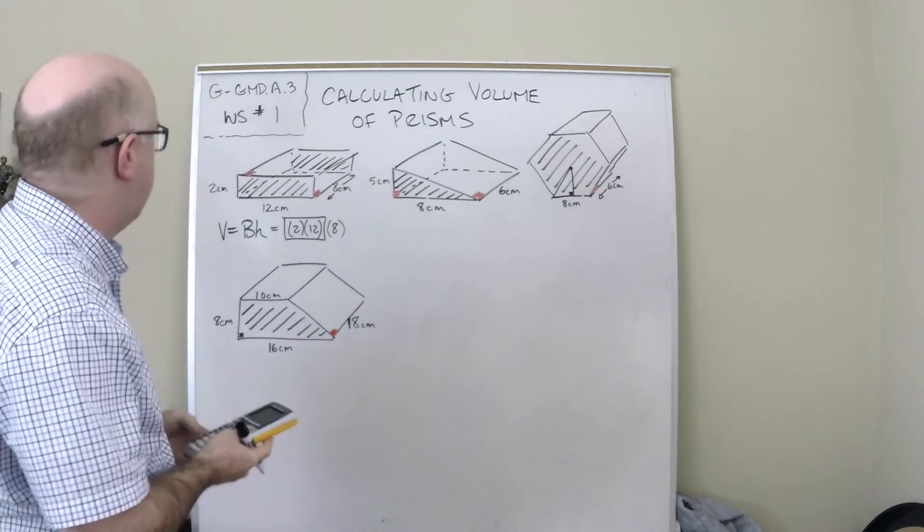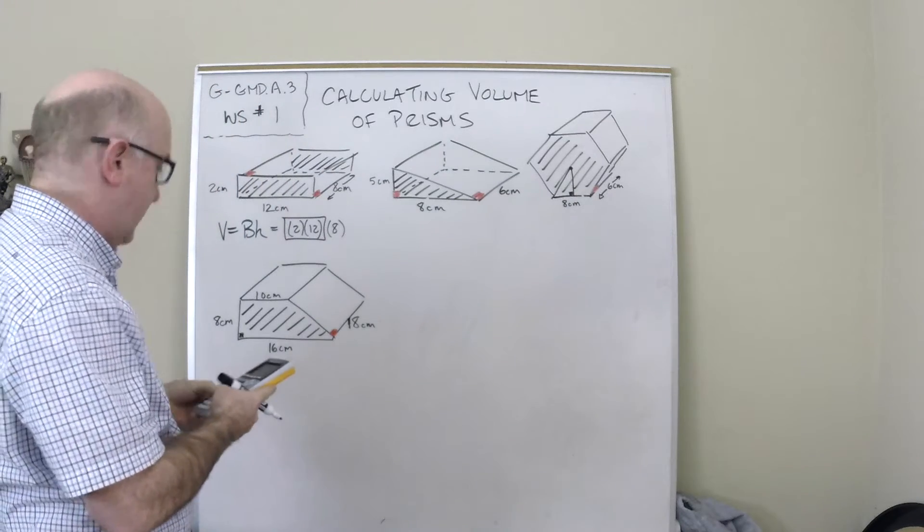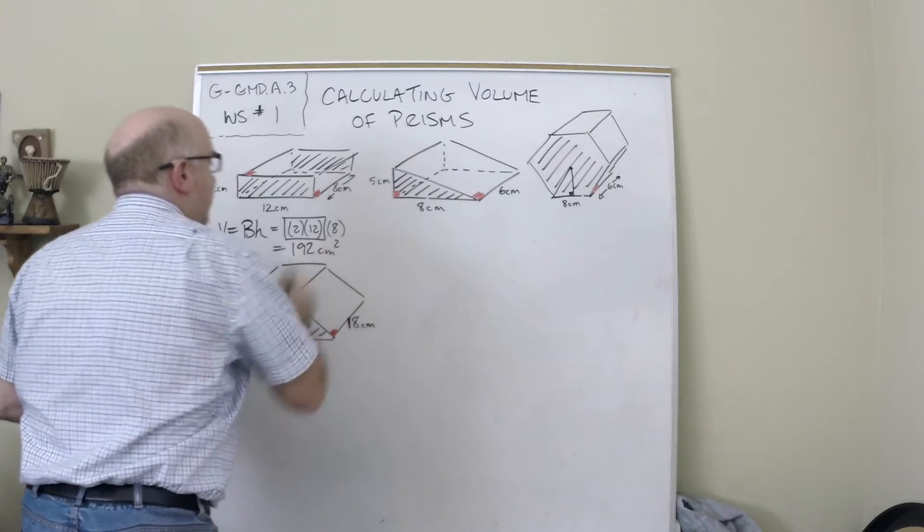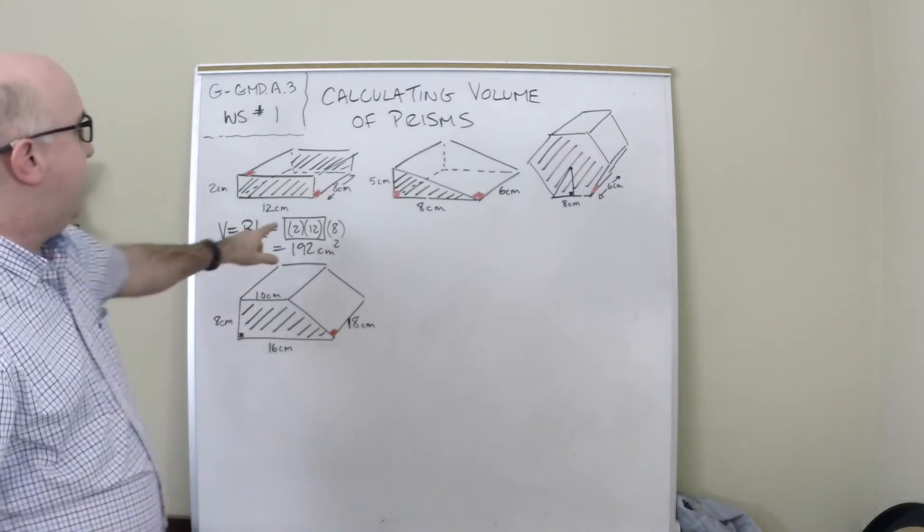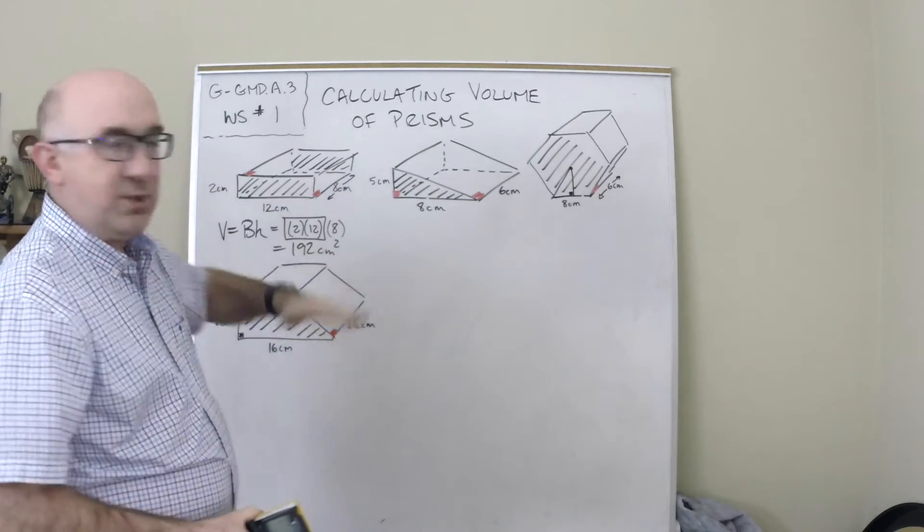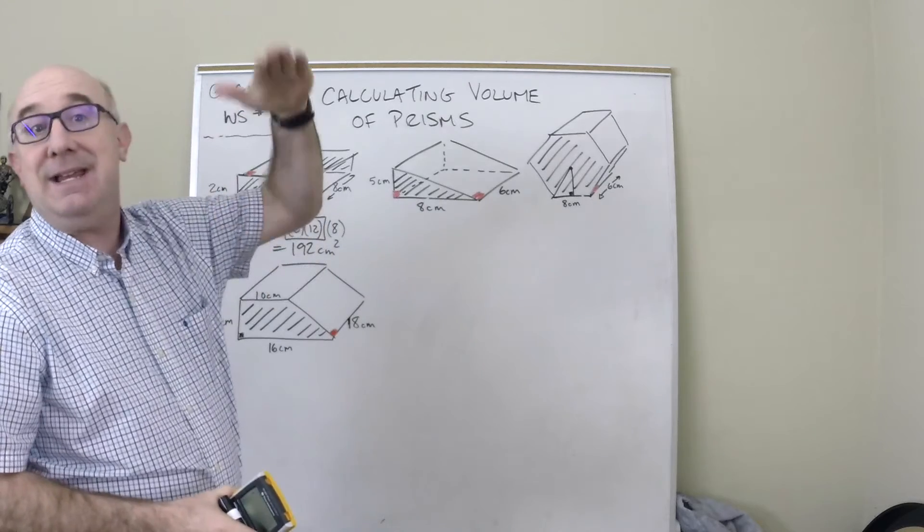So if we're calculating this, this is just 24 times 8. And so this is 192 centimeters squared. And so the idea is one slice, which is 2 times 12, and then stack it 8 centimeters tall.